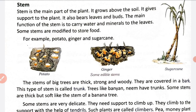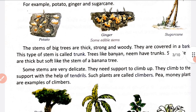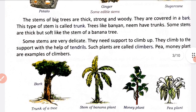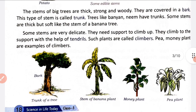Some stems are modified to store food. Kuch stems plant ke liye food ko store bhi karte hain, for example potato, ginger, and sugarcane. Stem of big trees are thick, strong and woody - like neem tree and banyan tree. Big tree trunks are strong, thick and woody; they are covered in a bark. This type of stem is called a trunk.